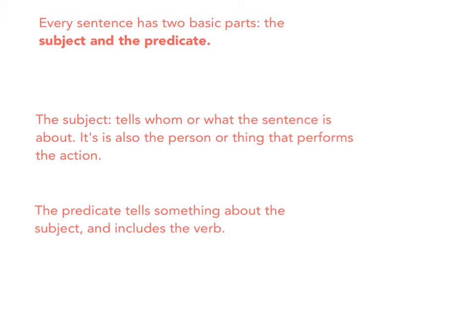Every sentence has two basic parts: the subject and the predicate. The subject tells whom or what the sentence is about. It is also the person or thing that performs the action. To find the subject, you need to ask yourself who or what does, has, or is something.